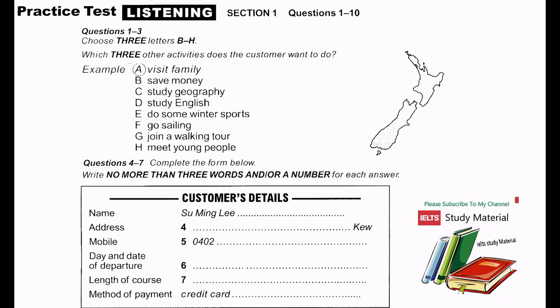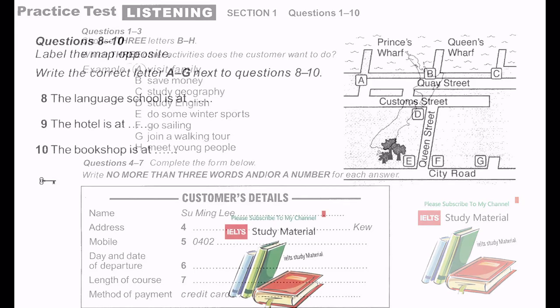And how long would you like to study for? A month, two, three? What do you think? Well, I'll probably need more than a month. What about eight weeks until the end of June? Fine. I'll see what I can do. Oh, and how would you like to pay for this? On my visa card, if that's possible. Before you hear the rest of the conversation, you have some time to look at questions 8 to 10.